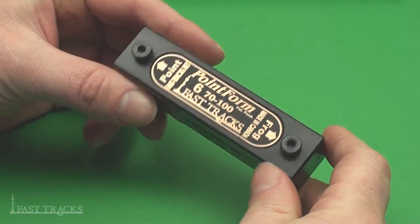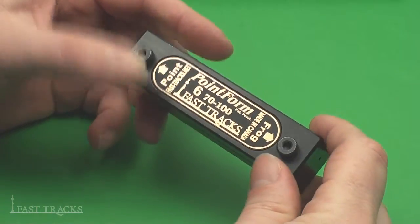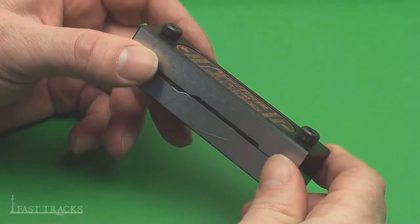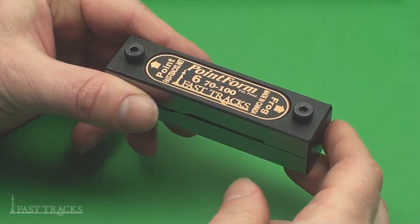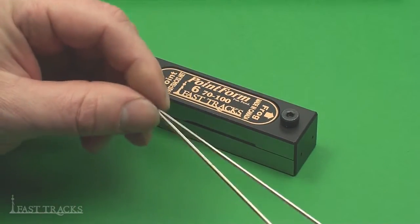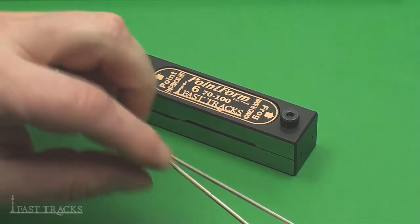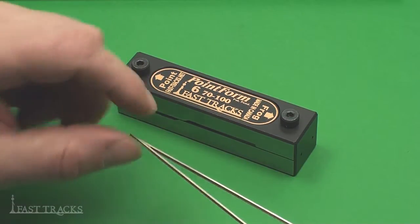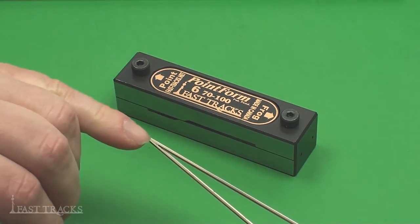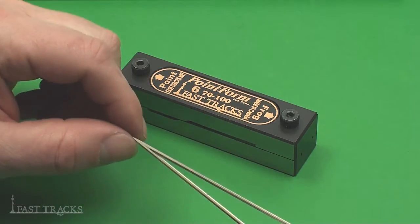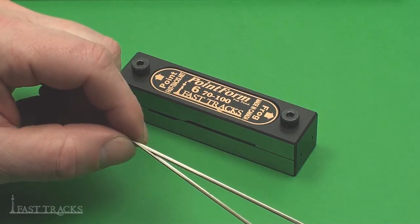Our point form tool actually will produce frog points as well as switch points. This video I'm just going to focus on making a set of frog points like these here. This has been already soldered together, but it's made up of two separate pieces of rail with a very precise angle filed on the end of the rail.